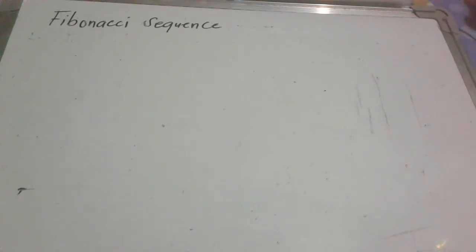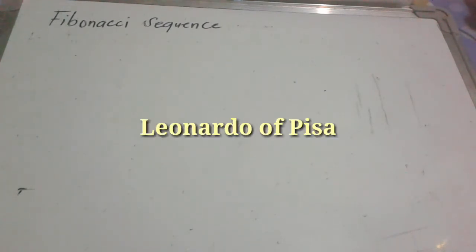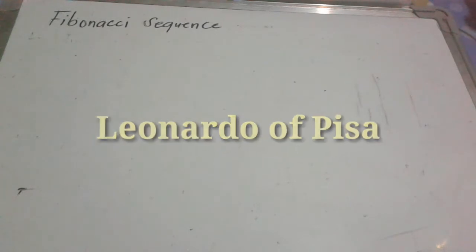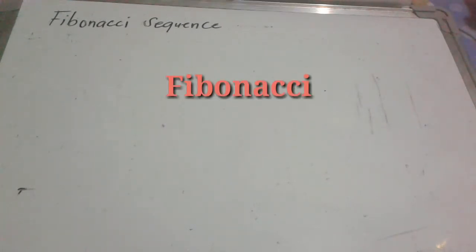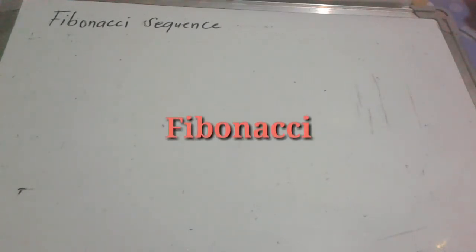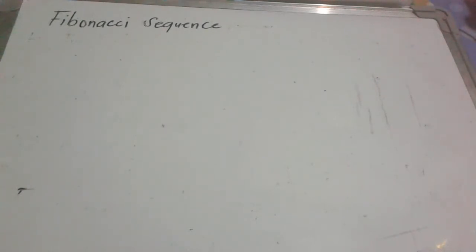The Fibonacci sequence is a special sequence. It is named after the Italian mathematician Leonardo of Pisa, who is better known by his nickname Fibonacci. The Fibonacci sequence is formed by adding the preceding two numbers, beginning with 0 and 1.